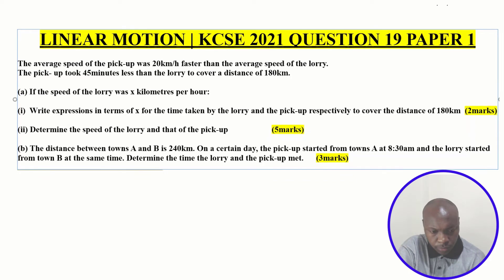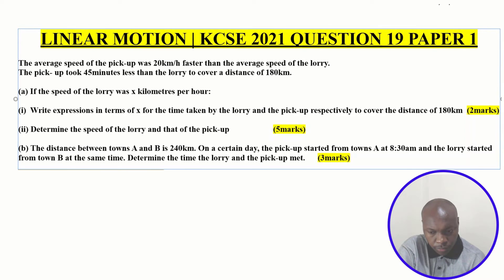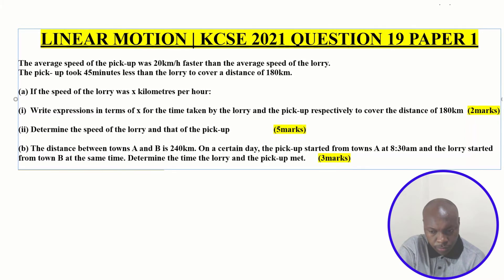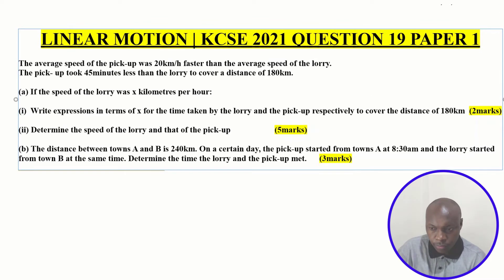Determine the speed of the lorry and that of the pickup. The distance between towns A and B is 240 km. On a certain day, the pickup started from town A at 8:30 a.m. and the lorry started from town B at the same time. Determine the time the lorry and the pickup met.